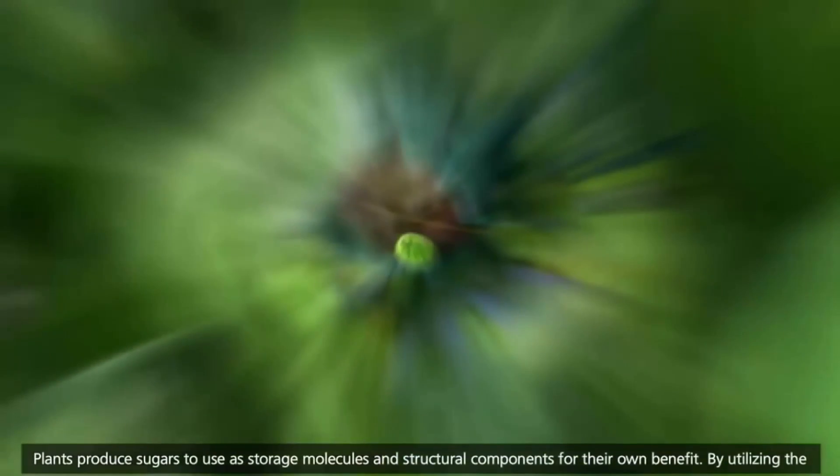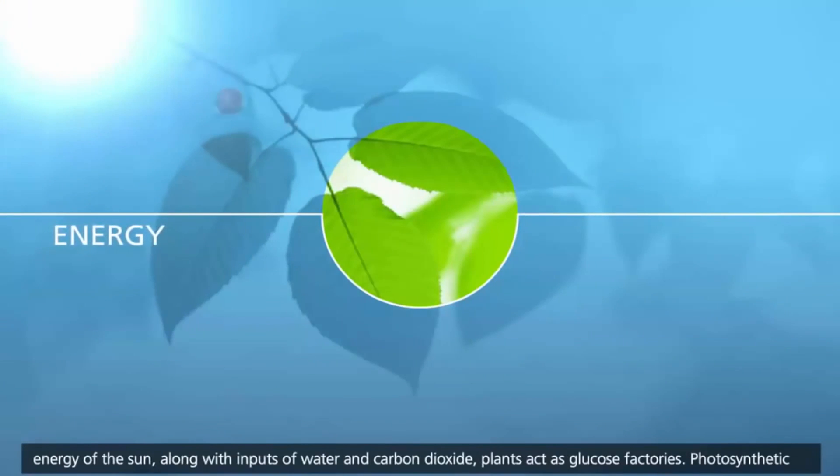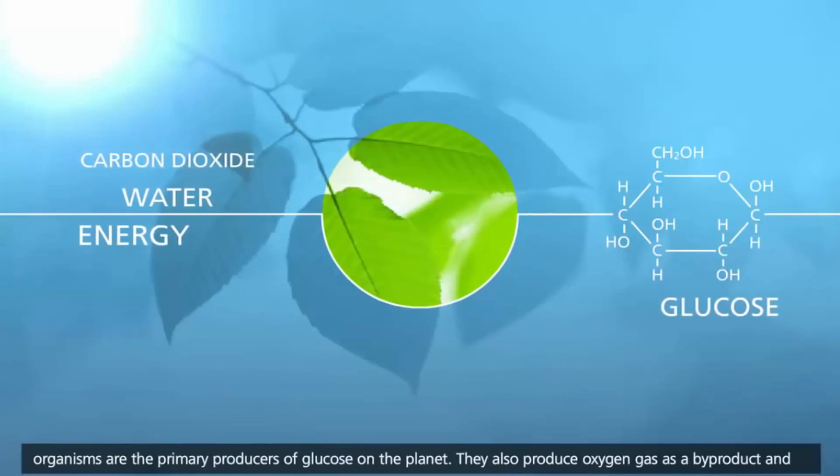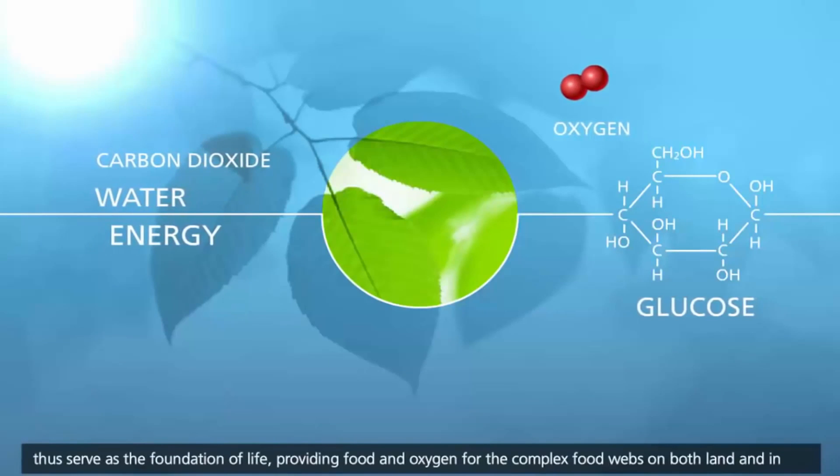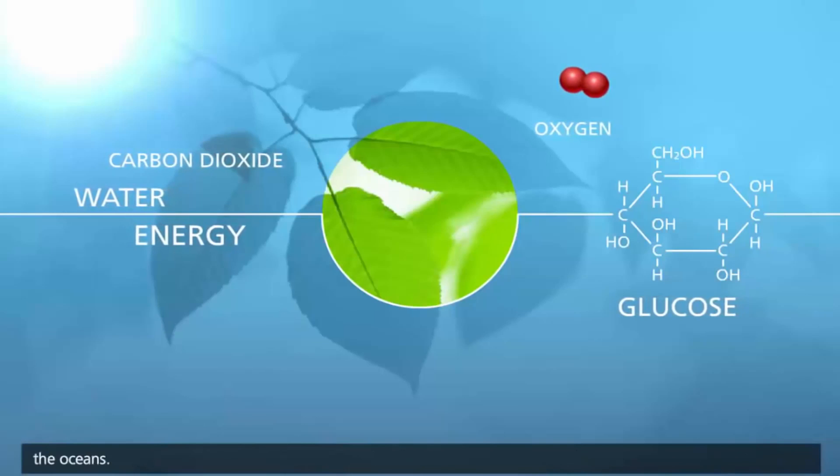Plants produce sugars to use as storage molecules and structural components for their own benefit. By utilizing the energy of the sun, along with inputs of water and carbon dioxide, plants act as glucose factories. Photosynthetic organisms are the primary producers of glucose on the planet. They also produce oxygen gas as a byproduct and thus serve as the foundation of life, providing food and oxygen for the complex food webs on both land and in the oceans.